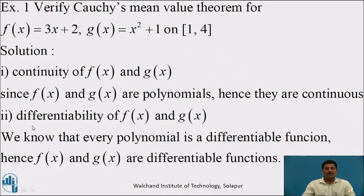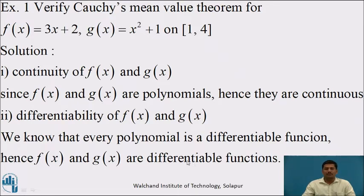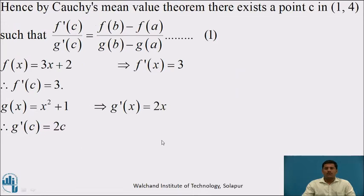Second condition: differentiability of these two functions on the interval. We know that every polynomial is a differentiable function. Therefore, f(x) and g(x) are also differentiable. Therefore, the two conditions of Cauchy's mean value theorem are satisfied.